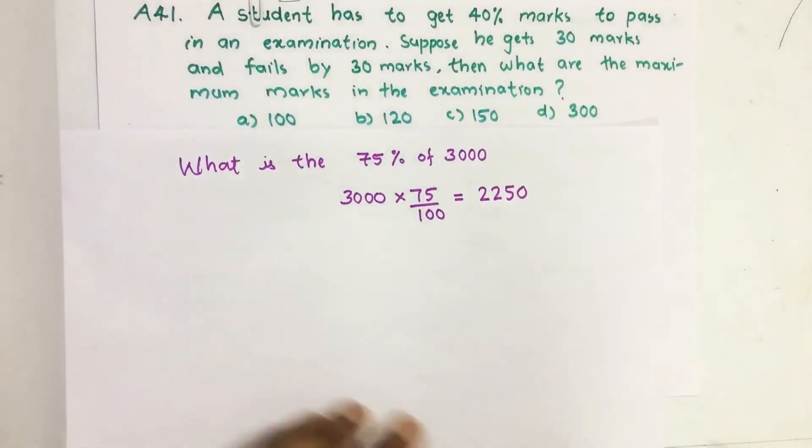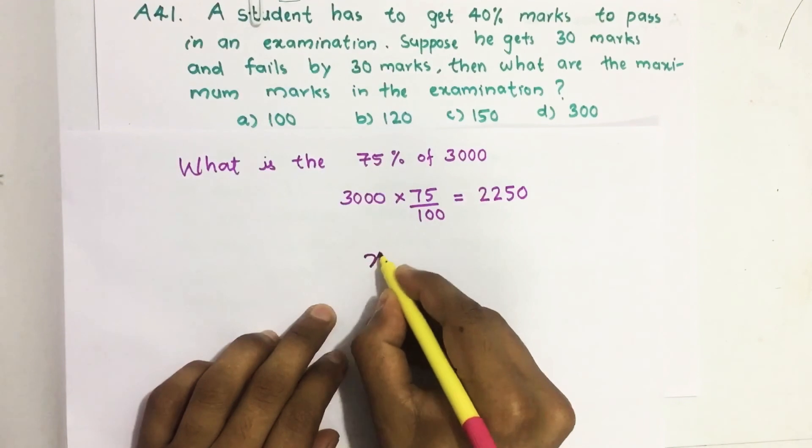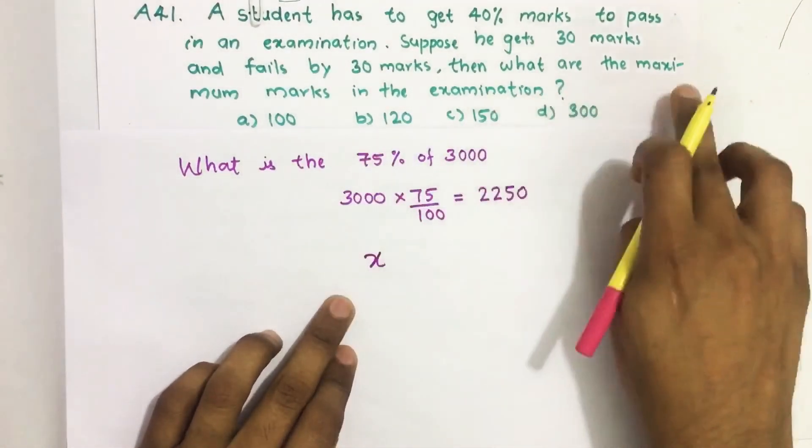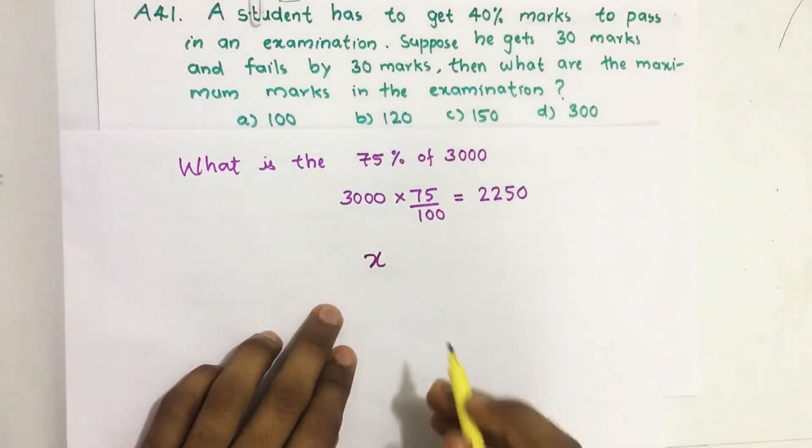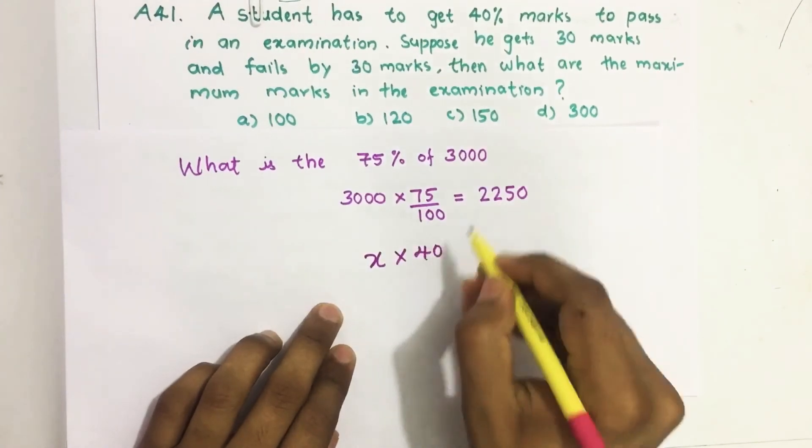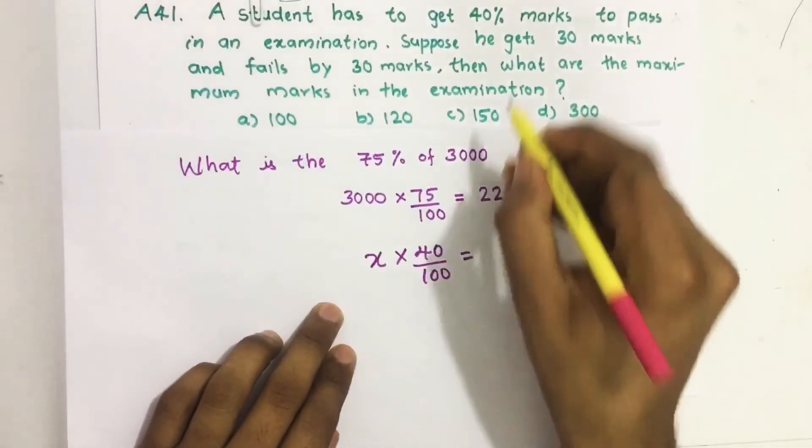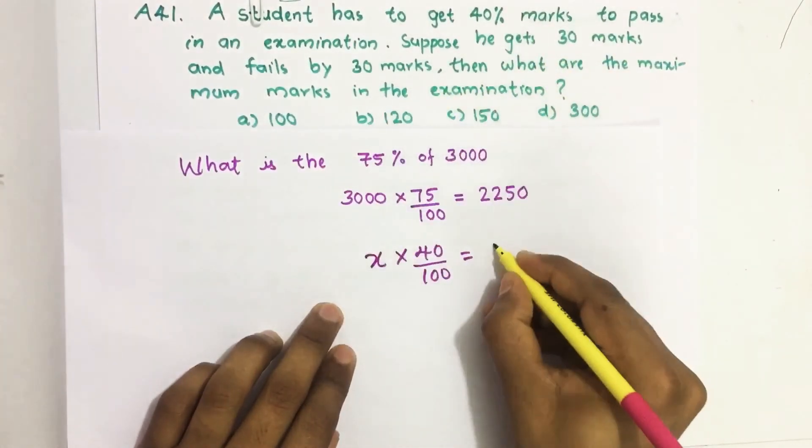The same way we are going to solve this example also. Here suppose X is the maximum mark in the examination and 40 percentage is the pass mark and we know this 40 percentage is 60 marks.